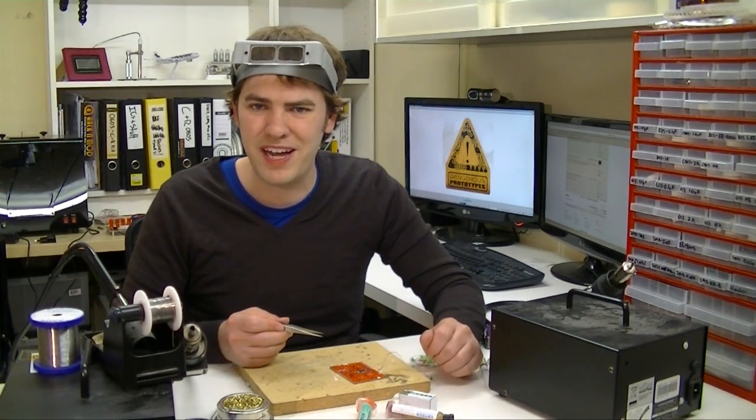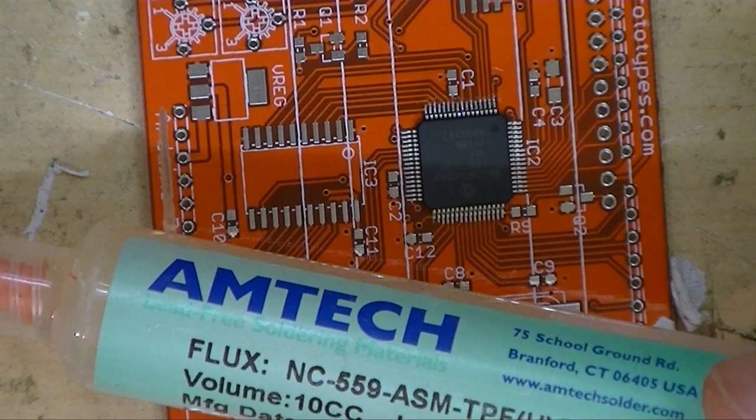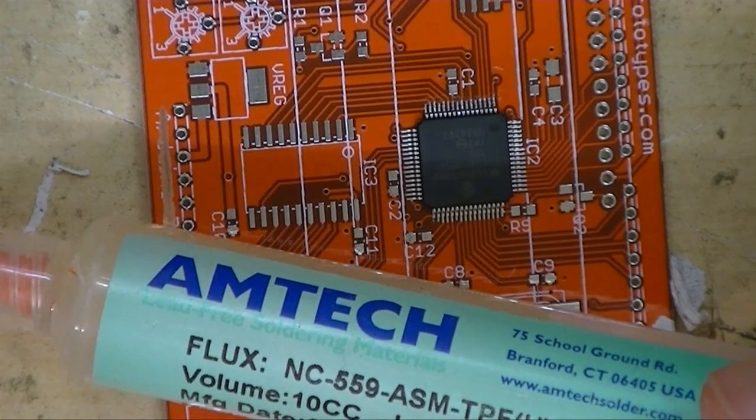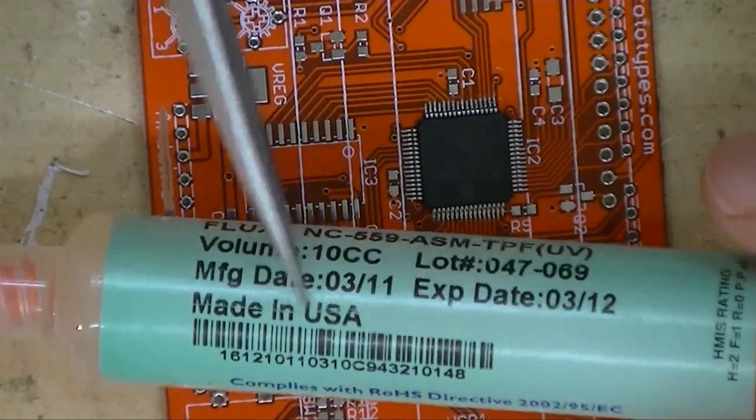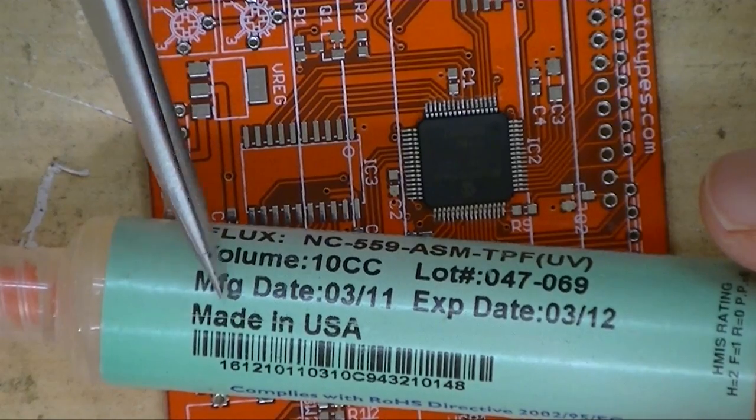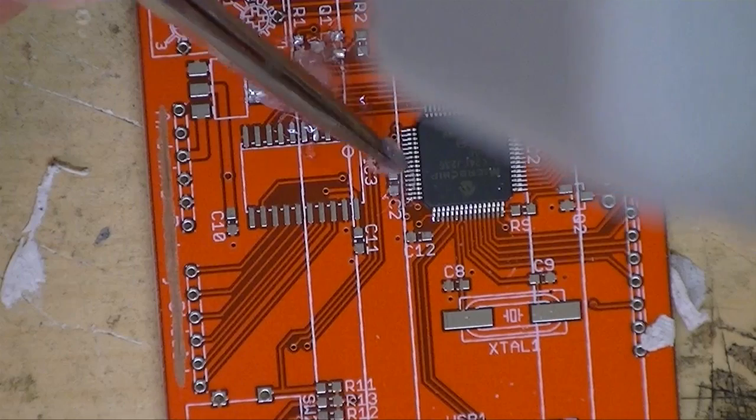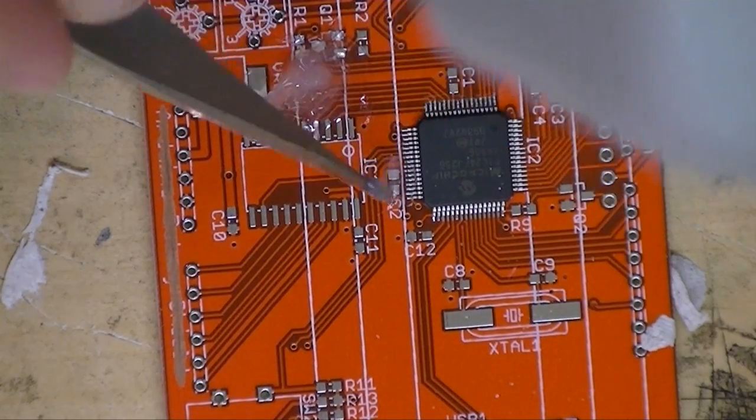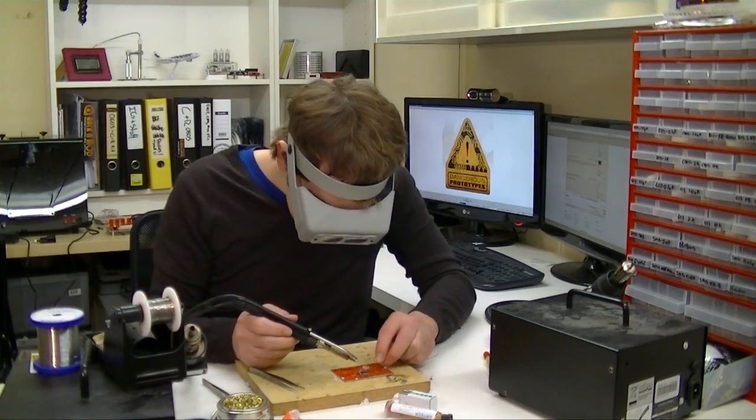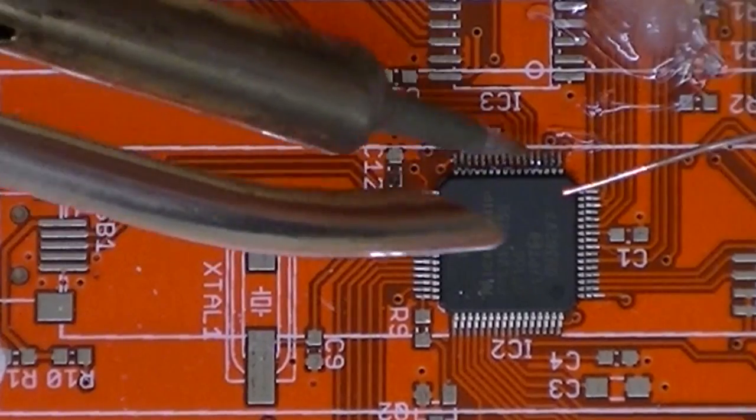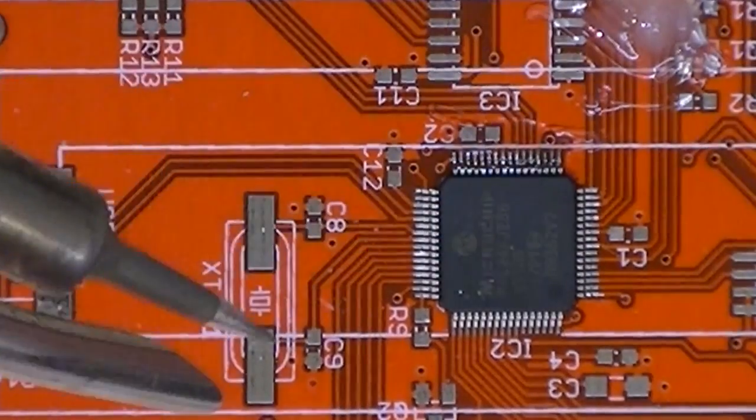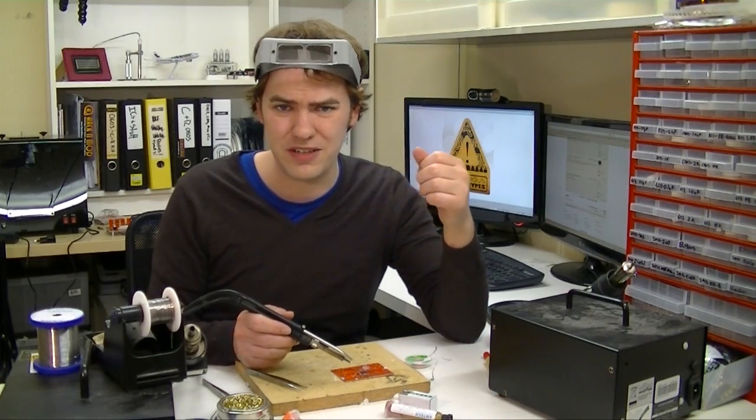Now we're going to try out the first Amtech flux from the market in China. It says Amtech, and here on the label it says Made in the USA. So I use this pair of old tweezers to put a little bit along one side. Whew. First thing without a doubt, this has a very strong odor. It's not foul. It's a little bit sweet, but it's not something I want to smell all day. It's definitely one to use the fume extractor with.